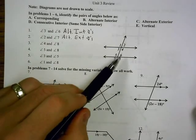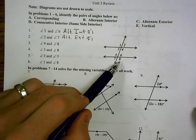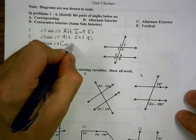Angles 4 and 8 are in the same location, they're both in the bottom right of the intersection. When they're in the same location, they're corresponding angles.